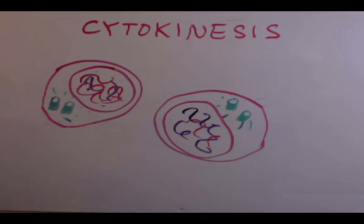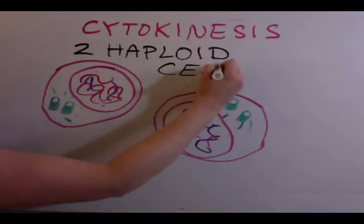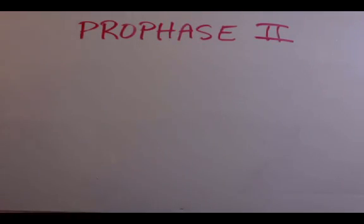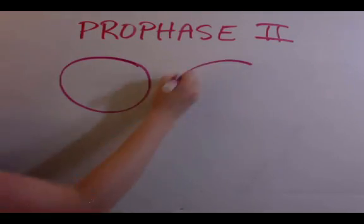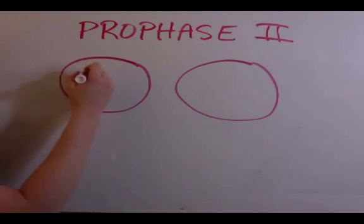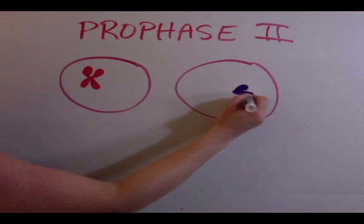Now, this next stage of meiosis is actually just like mitosis, except during prophase 2, the chromosomes do not duplicate. But still, the nuclear membrane disappears.